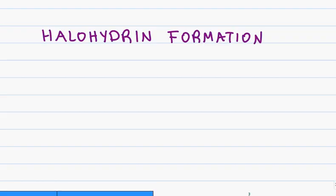What is a halohydrin? Halohydrin comes from 'halo' which is halogen, and 'hydrin' coming from hydro or water, meaning H2O.